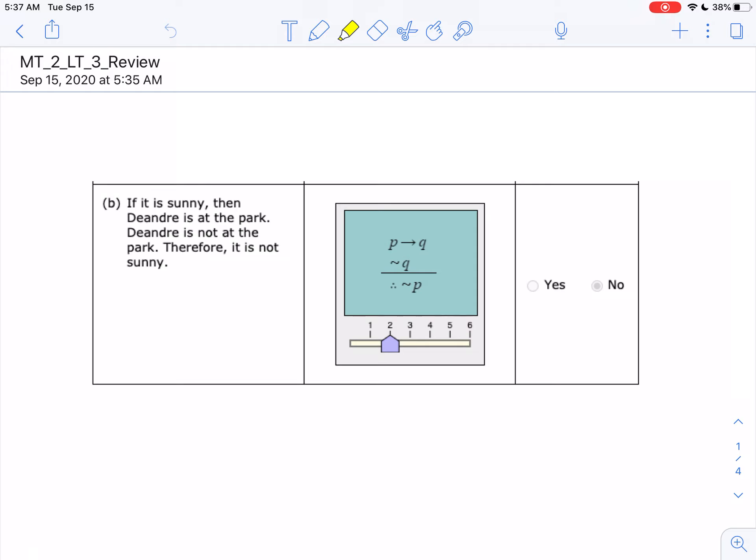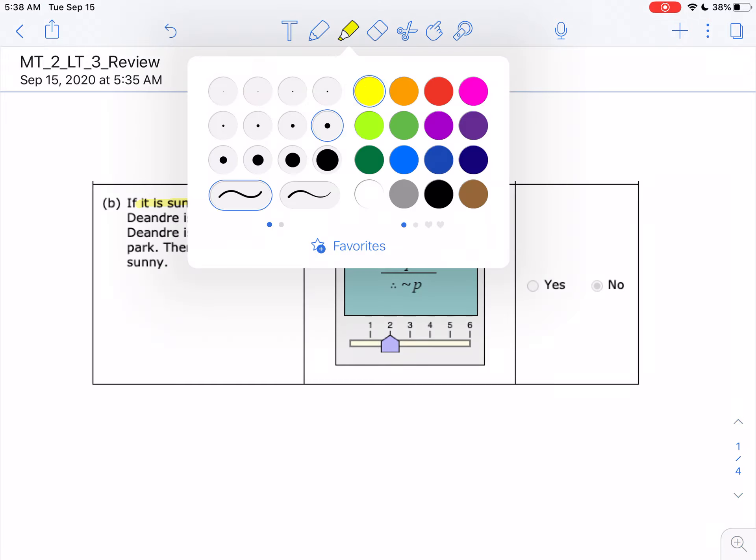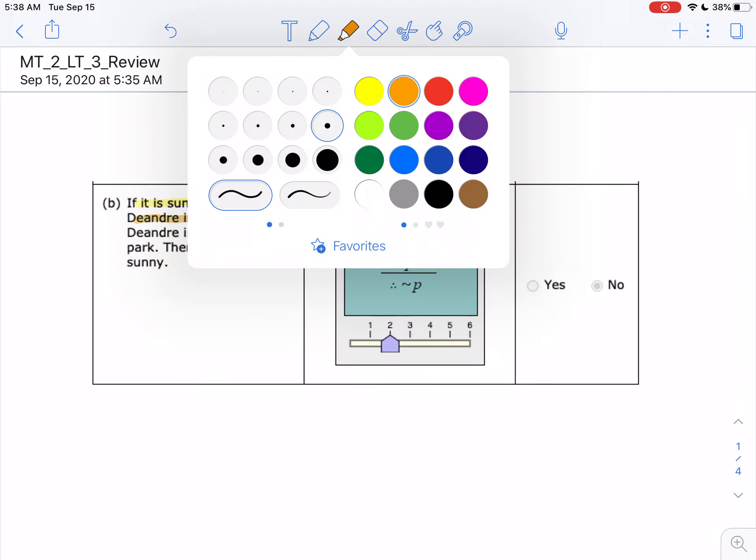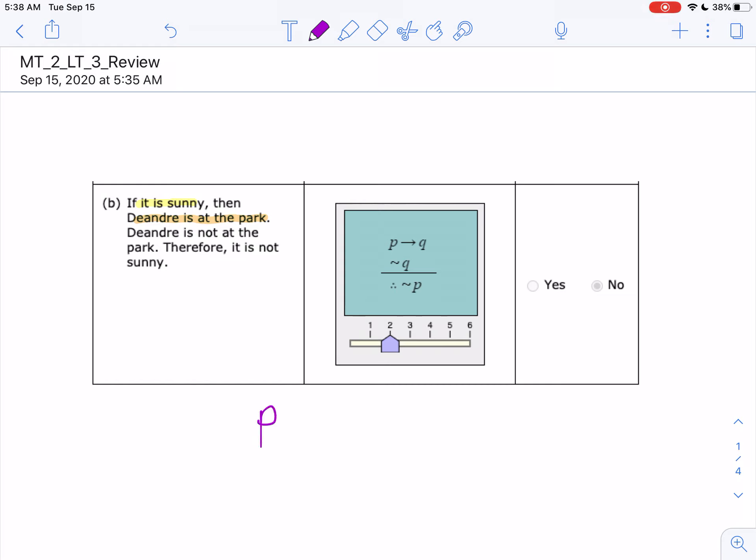I think you've got the first part right. Because the hypothesis, if it is sunny, the conclusion is D'Andra is at the park. So we're going to say, like you said, P implies Q. That's correct.